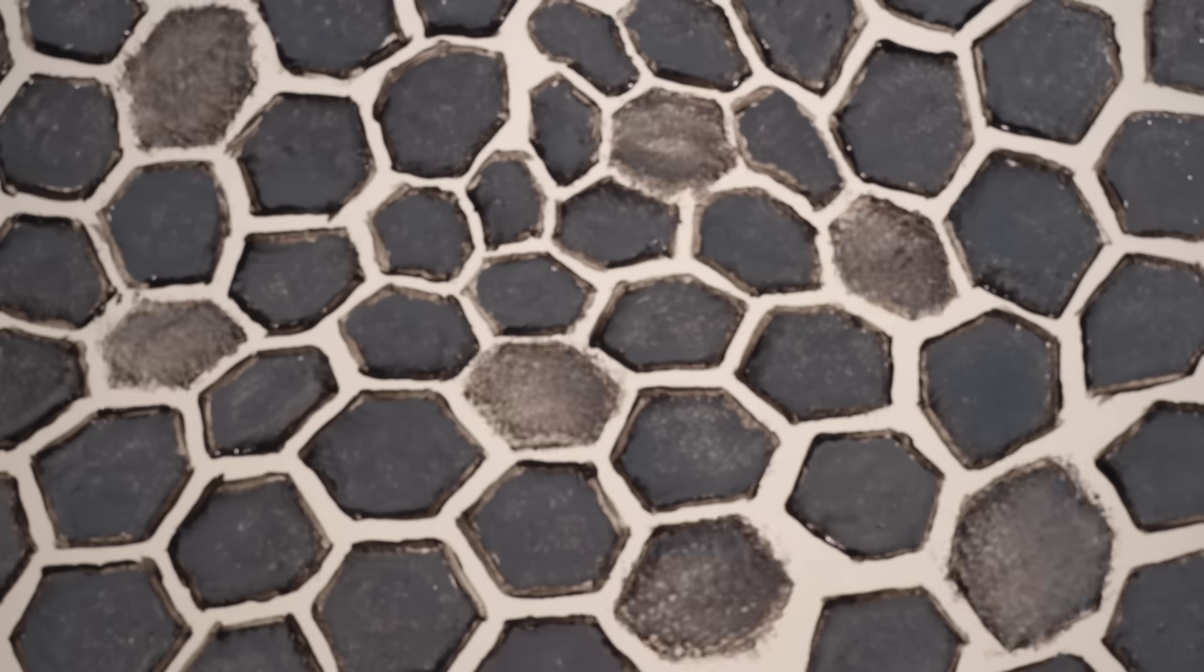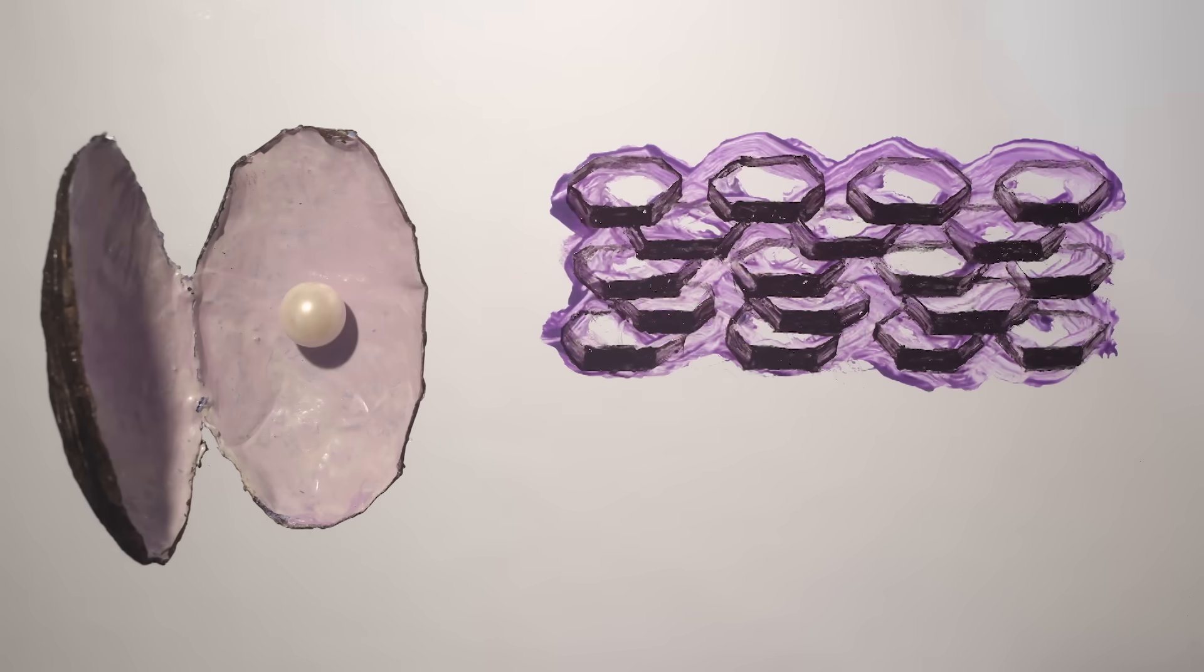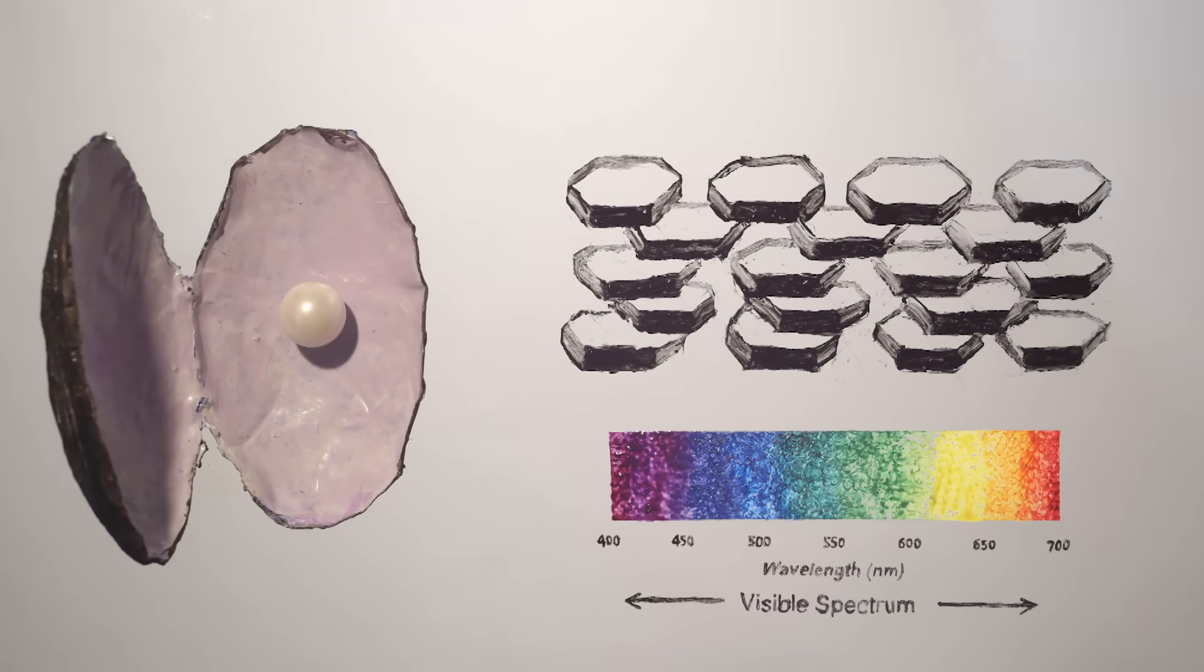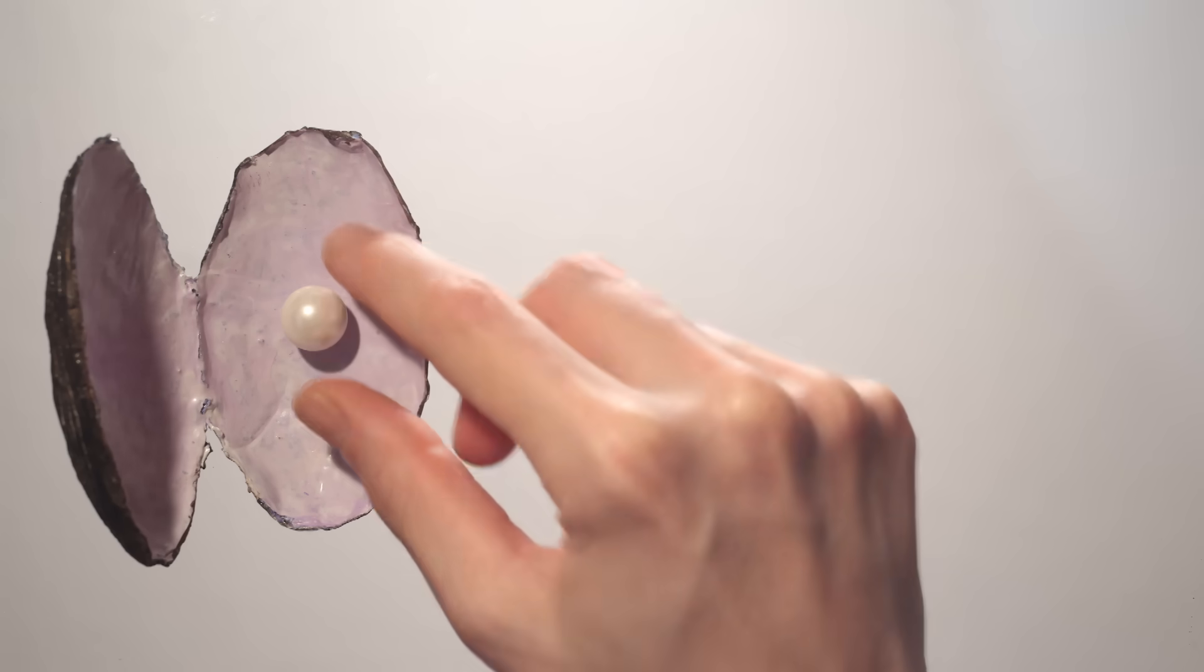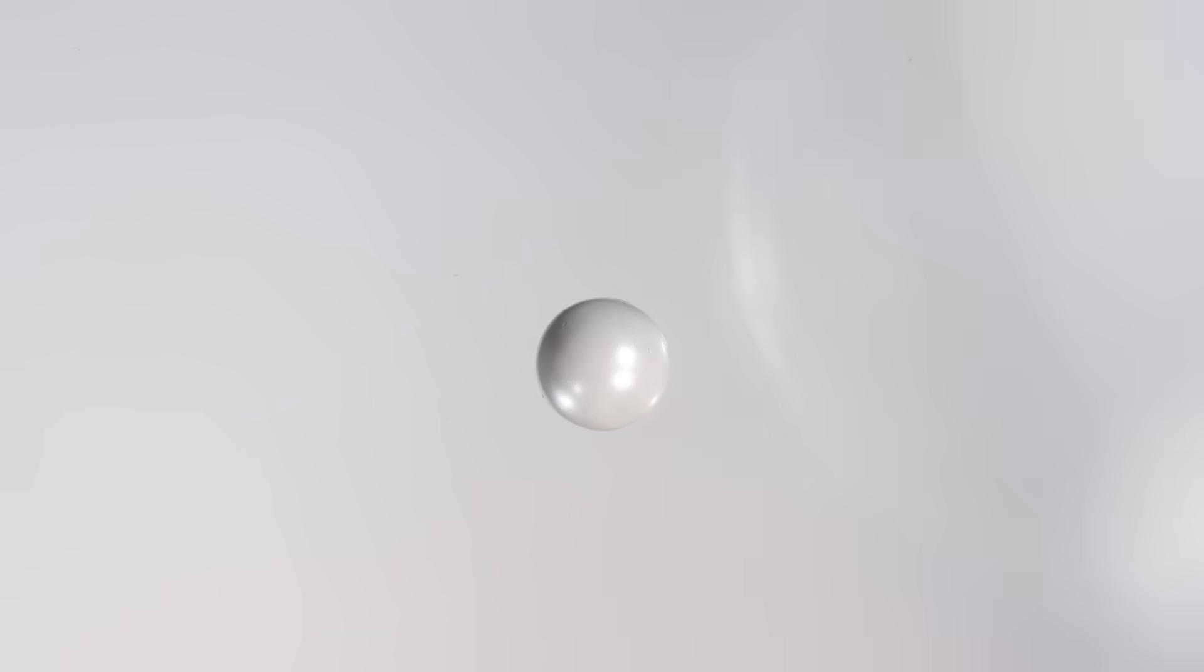But one form of aragonite is stronger and more versatile than the rest: nacre. Mollusks make this special material by placing successive layers of aragonite interspersed with proteins. These layers are stacked like hexagonal bricks, each surrounded by other organic material that directs their orientation. The uniform layering and brick-like structure of nacre is key to its signature iridescence. The layers are similar in thickness to the wavelength of visible light, so the light reflecting from its interior surface interferes with the light reflecting from the outer surface. When particles of light strike the nacre, they bounce around its multi-layered crystalline structure in a cascade of shifting rainbows.